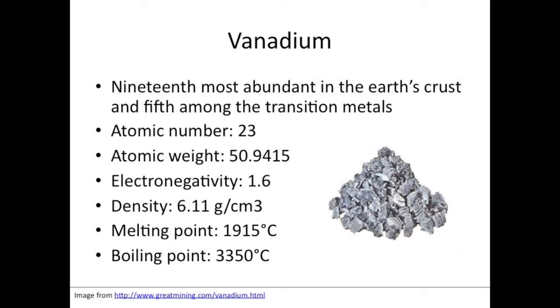Vanadium can be found on the Earth's crust with abundance of 0.0136%, which is the 19th most abundant element in the crust. In terms of transition metals, it is the fifth most abundant and is widely distributed. Vanadium has an atomic number of 23, atomic weight of 50.9415, electronegativity of 1.6, density of 6.11 grams per cubic centimeter, has a melting point of 1915 degrees Celsius and boiling point of 3350 degrees Celsius. Vanadium has high melting point